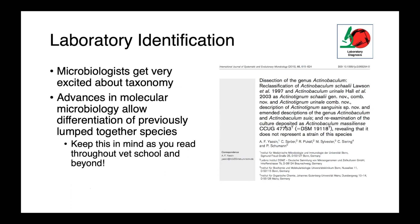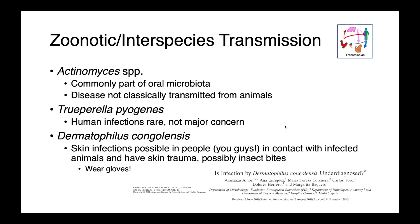Microbiologists get very excited about taxonomy, so keep in mind that names are likely to change as you move through vet school and into practice. Advances in microbiology allow things which were previously lumped together to be split into unique species. As far as zoonotic or interspecies transmission goes, Actinomyces is part of the normal oral microbiota — we have it in our own mouths — and when people get infections with these bugs, it's typically not transmitted from animals, so zoonotic risk is low. Trueperella pyogenes is also not a major zoonotic risk. Dermatophilus congolensis, on the other hand, can cause skin infections in people when there is contact with infected animals and some skin trauma such as a small cut or possibly insect bites, so when working with these dermatitis cases, wearing gloves is strongly encouraged.